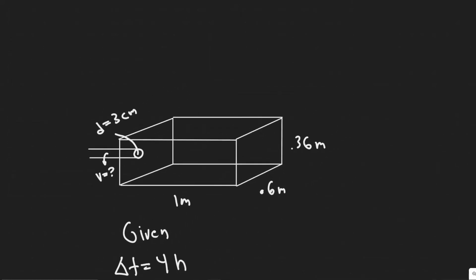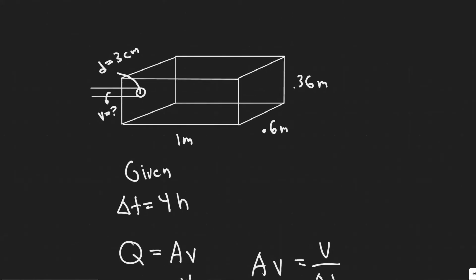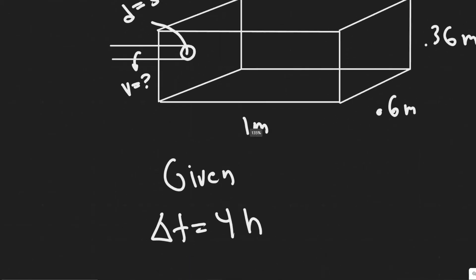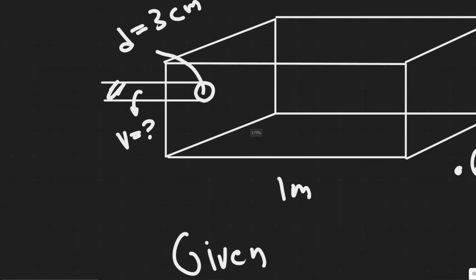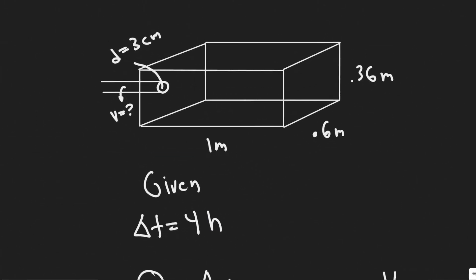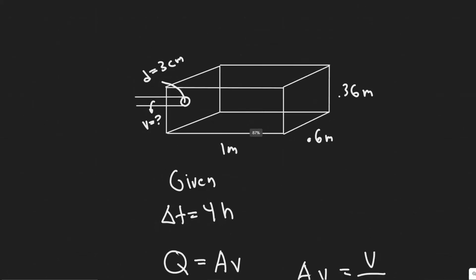The way we're going to solve this problem is by looking at the flow rate. The formula for flow rate is Q equals the cross-sectional area times the velocity. This is the formula used to relate the flow rate inside a tube. The flow rate in this tube is the velocity — which we're trying to find — multiplied by the cross-sectional area. Imagine just one circle as the cross-section, and we need to find the area of that.